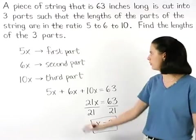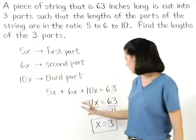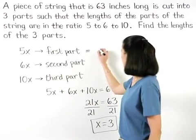So the length of the first part of the string, 5x, is 5 times 3, or 15 inches.